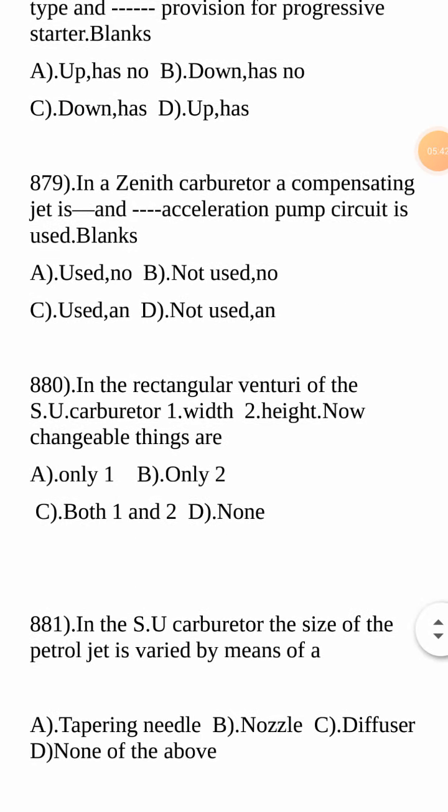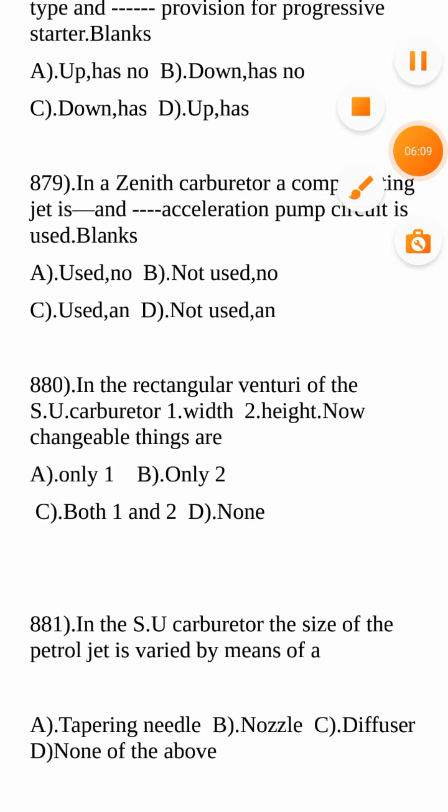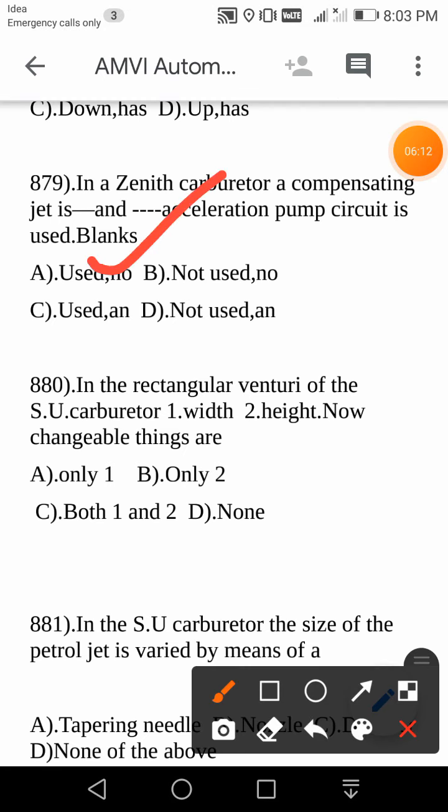Next question: In a Zenith carburetor, a compensating jet is dash and dash acceleration pump circuit is used. The correct combination is: a compensating jet is used, but no acceleration pump circuit is used. The combination is 'used' and 'no.' Your answer is A.